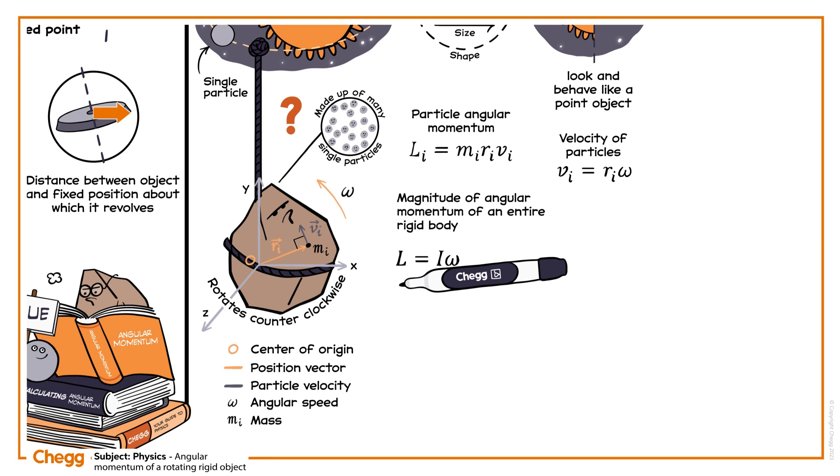We can prove it like this. Take the angular momentum equation from earlier. The velocity equation we introduced earlier told us that VI is equal to RI omega. So we can replace VI with RI omega in the top equation.